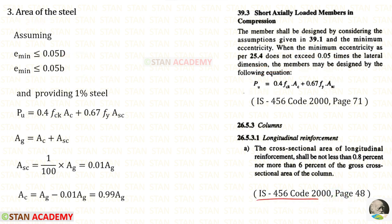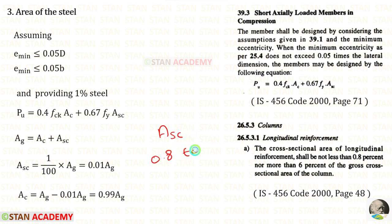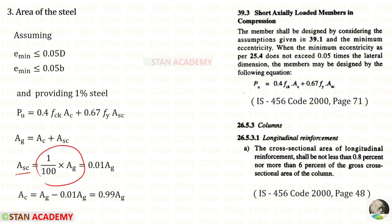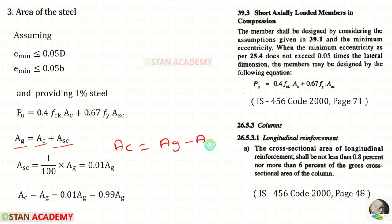Let us open the code book page number 48. This clause states that the cross sectional area of longitudinal reinforcement shall be not less than 0.8% and not more than 6% of the gross cross sectional area. So we have to keep ASC between 0.8% to 6%. Let us provide 1% of steel, so area of steel ASC will be 0.01 AG. From the gross area relationship, AC is equal to AG minus ASC, giving us AC equal to 0.99 AG.